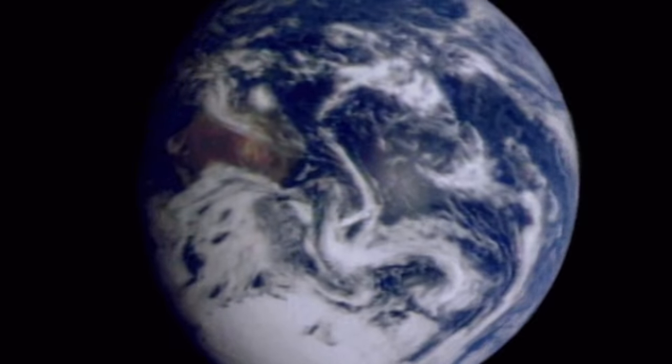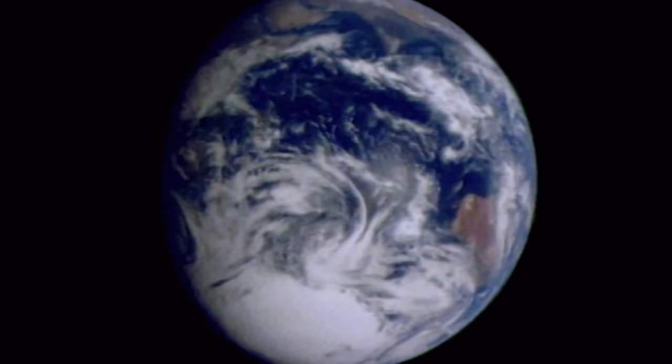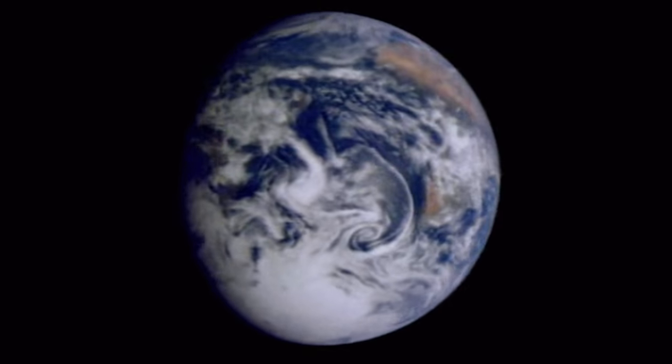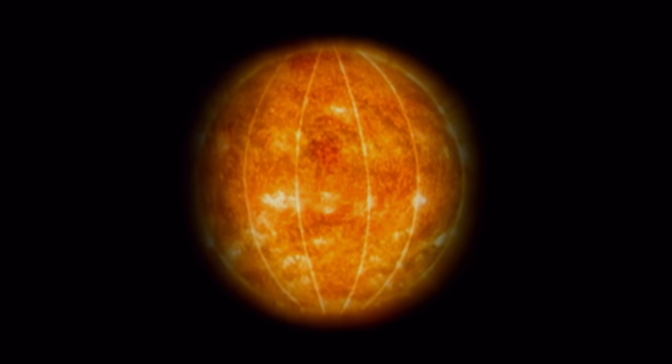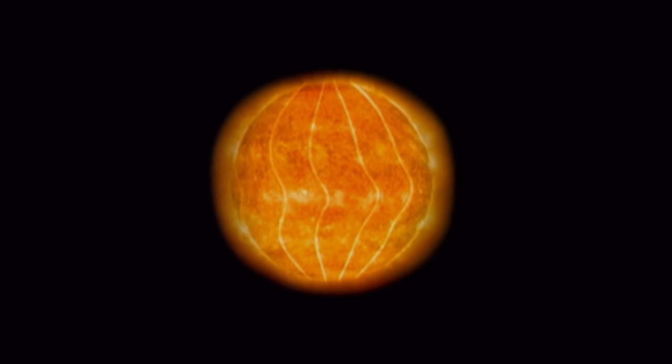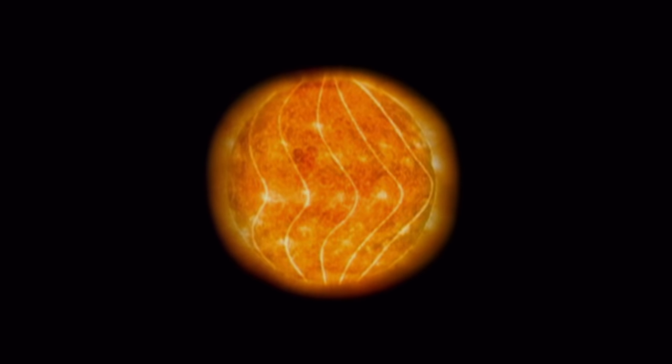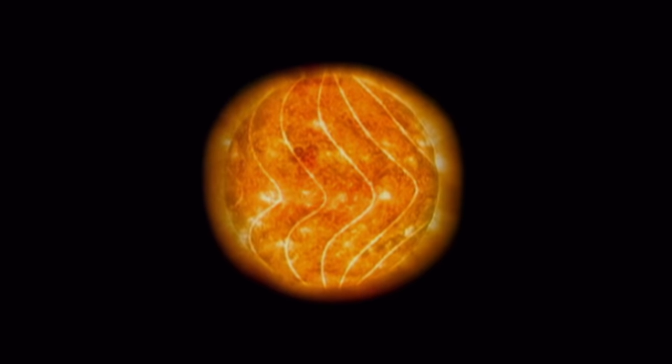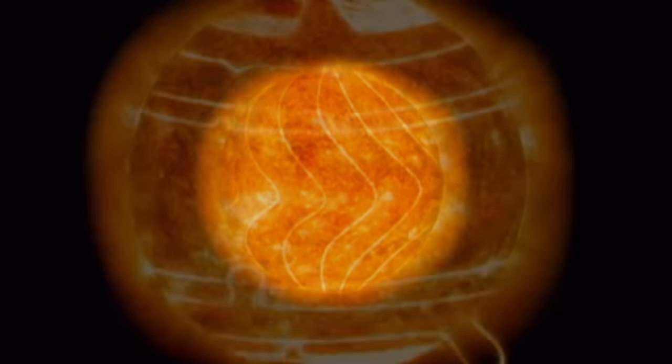On planets like the Earth, every part makes a full revolution around its axis each day. But the Sun is a dynamic ball of gas. Its equator rotates in 25 days, but the poles take 35 days. The magnetic loops stretch and distort as it turns.